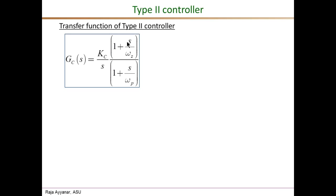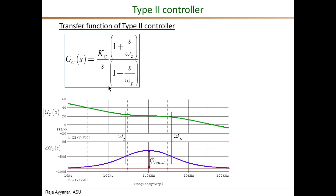Here is the transfer function of the Type 2 controller. It has the Kc over s term as in Type 1. In addition, it has one zero at omega_z and one pole at omega_p. The Bode plot for just the Type 2 controller alone is shown here. In the magnitude plot, initially before the zero location it comes down at minus 20 dB per decade. The zero adds another plus 20 dB per decade slope, making it a flat zero dB slope.